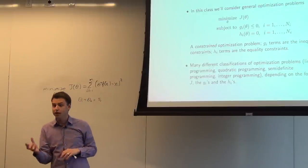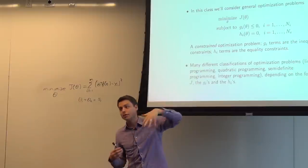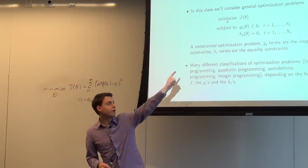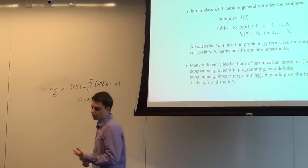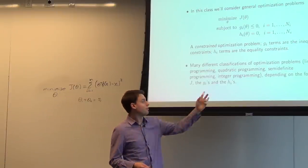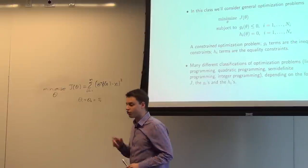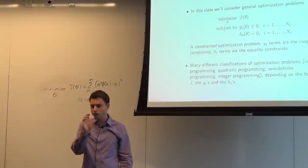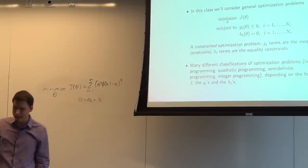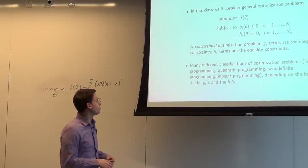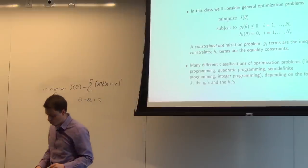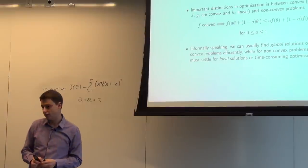There are many different classes of optimization problems. You might have heard of linear programming, quadratic programming, semi-definite programming, or integer programming — where some constraints require elements of theta to belong to the integers or take only 0 or 1 values. But most of this course is really going to talk about a very specific type called a convex optimization problem.